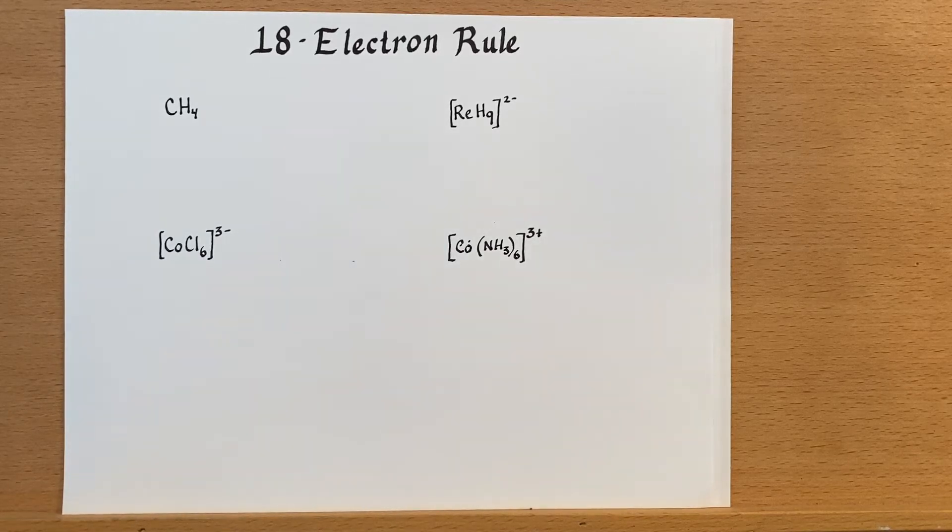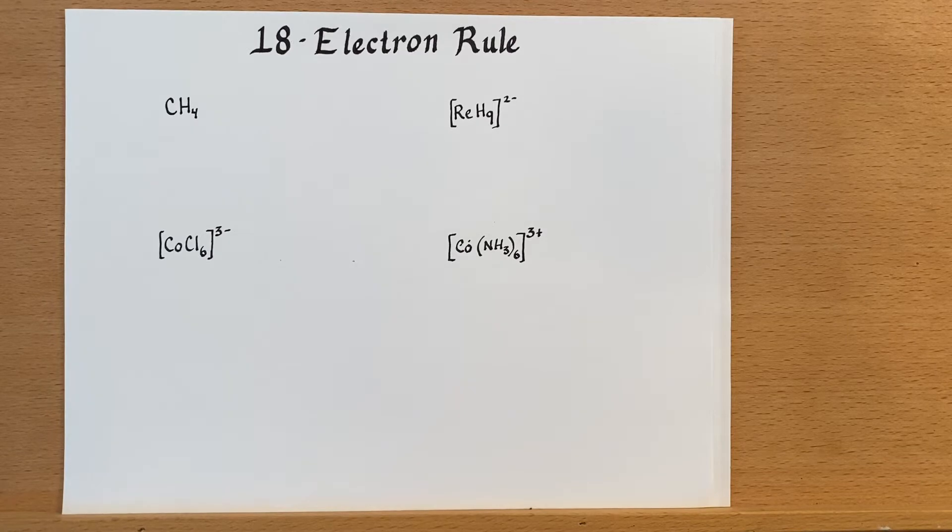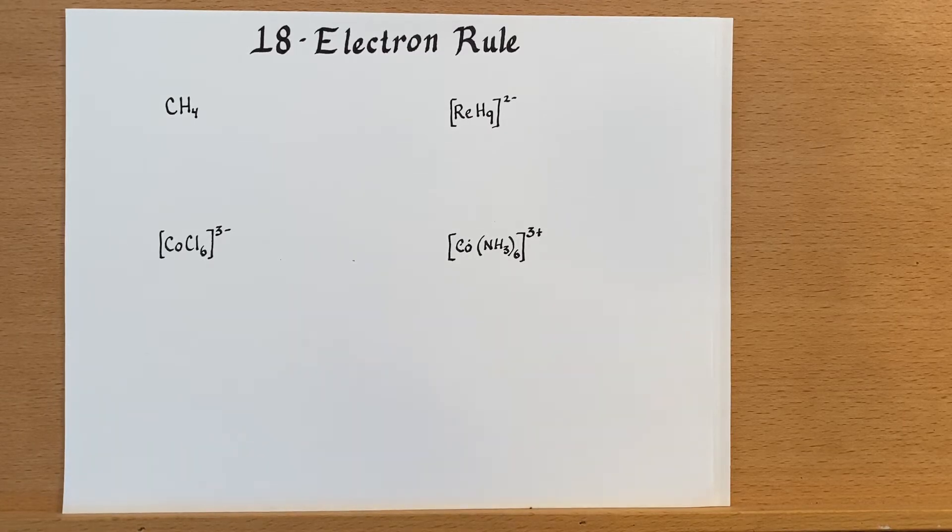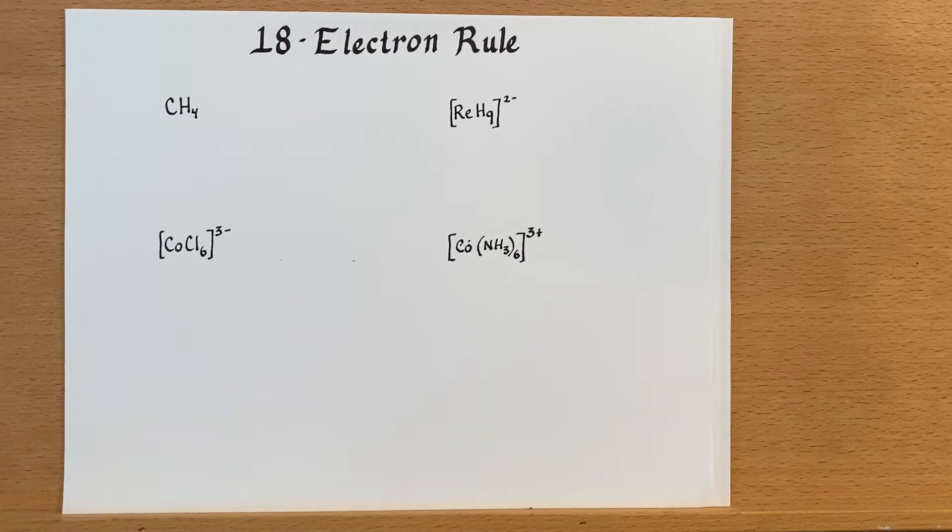The 18-electron rule is something that we can use for organometallic compounds or coordination compounds that are in the D block or transition metal block. Now we might be familiar with the octet rule, which would be eight electrons, but now that we have the D block available to us, that can add 10 more spots for electrons, so 8 plus 10 equals the 18-electron rule.